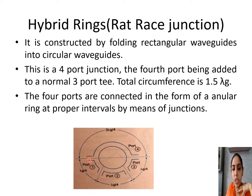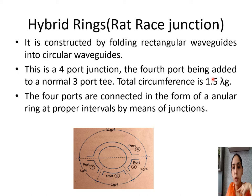The distance between the ports must be kept as such. Adding all segments: 3 lambda-g by 4 between ports 1-2-3-4, and again 3 lambda-g by 4 between port 4 and port 1. The total is 6 lambda-g by 4, which is 1.5 lambda-g. This is how a hybrid ring or rat race junction is constructed.